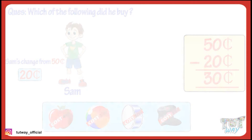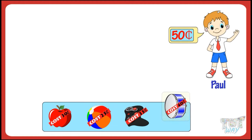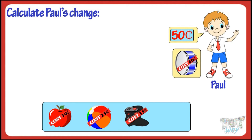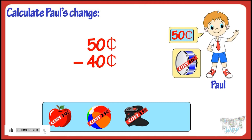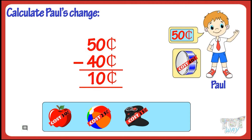Now let's take another example. Paul goes shopping with 50 cents. He buys a toy drum. Now calculate his change. Let me help you do that. Subtract the amount spent by Paul from the total money Paul had. So Paul's change would be 10 cents.